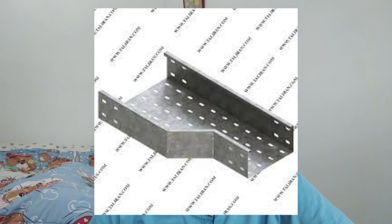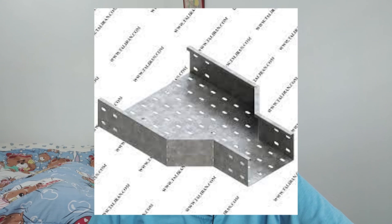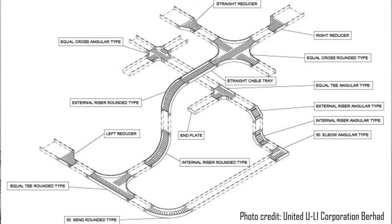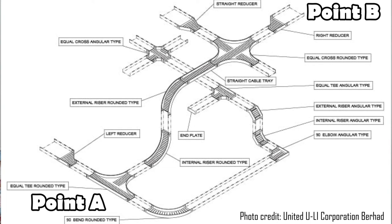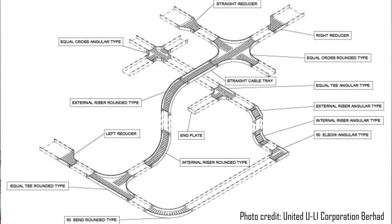Another commonly seen connector is the reducer. We have the left side reducer, where the reducing part is on the left, the right side reducer, and the straight reducer that reduces in the middle. Looking at this diagram, you can see various types of connectors used to connect from point A to point B through different directions — left, right, up, or down.